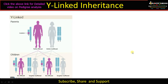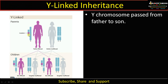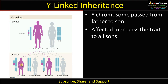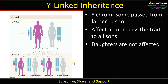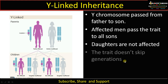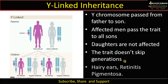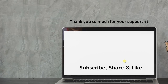To summarize Y-linked inheritance: the Y chromosome is passed from father to son, therefore affected males pass the trait to all sons, whereas daughters are not affected as they receive only X chromosomes from the father. This trait does not skip generations. Examples include hairy ears and retinitis pigmentosa. Thank you so much for your support.